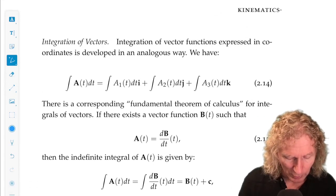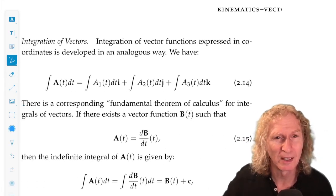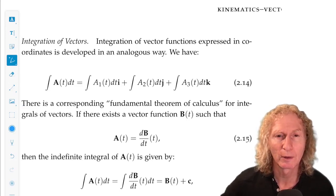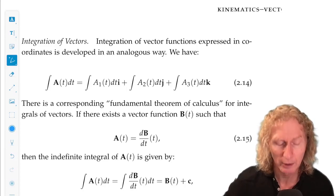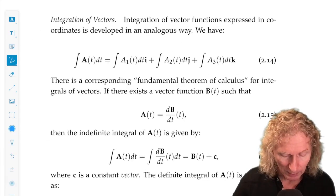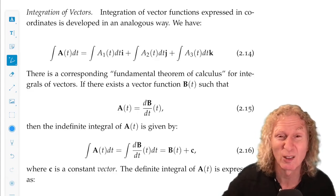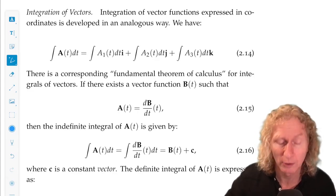Integration of vectors. That's the same idea. A of t is the vector-valued function of the scalar variable expressed in the i, j, k coordinates. And the integral is just the integral of each component. That's the only thing that can vary, be integrated.